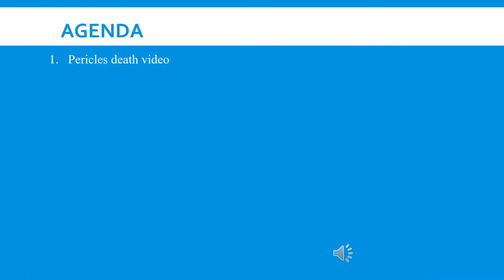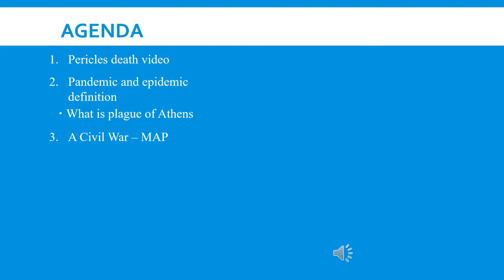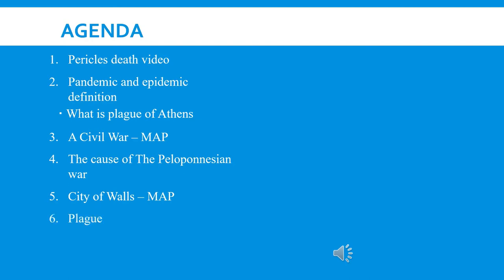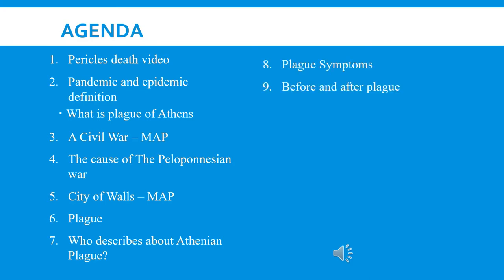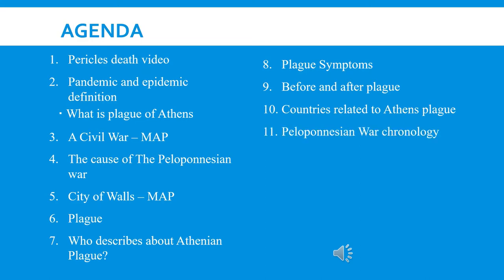Today we are going to look at the introduction, Pericles the king of Athens' death, pandemic and epidemic definitions, what is the Plague of Athens, a civil war, geography — this plague happened during a war — showing Spartans and Athens city-states, the cause of the Peloponnesian War, the City of Walls and how it was built to protect the city, plague symptoms, who describes the Athenian plague, before and after plague, countries related to Athens plague, Peloponnesian War chronology, and a comparison of Sparta and Athens — similarities yet differences — followed by a summary and conclusion.